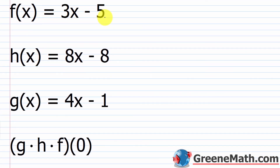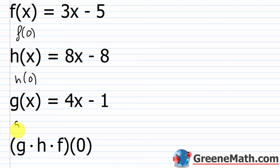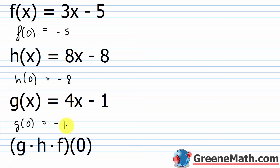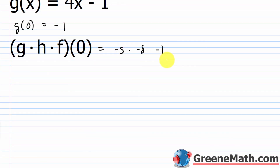We have f of x equals 3x minus 5, h of x equals 8x minus 8, and g of x equals 4x minus 1. We're asked to find (g × h × f)(0). Rather than multiplying all three polynomials, plug in 0 for each: f of 0 is 3 times 0 minus 5, which is negative 5; h of 0 is 8 times 0 minus 8, which is negative 8; g of 0 is 4 times 0 minus 1, which is negative 1. So we have negative 5 times negative 8 times negative 1. Negative 5 times negative 1 is 5, and 5 times negative 8 is negative 40.